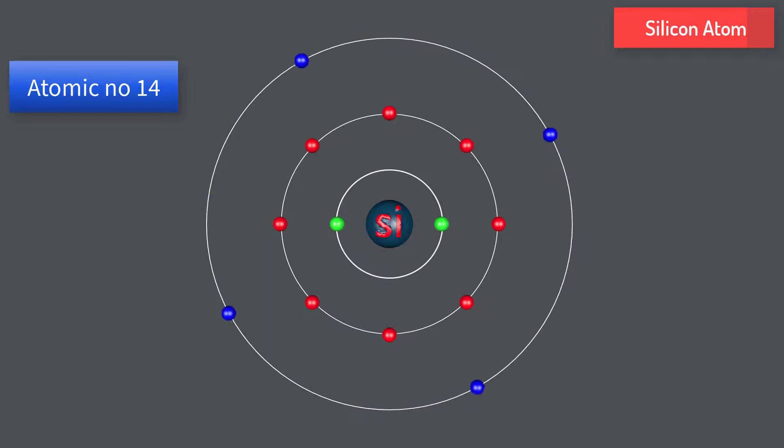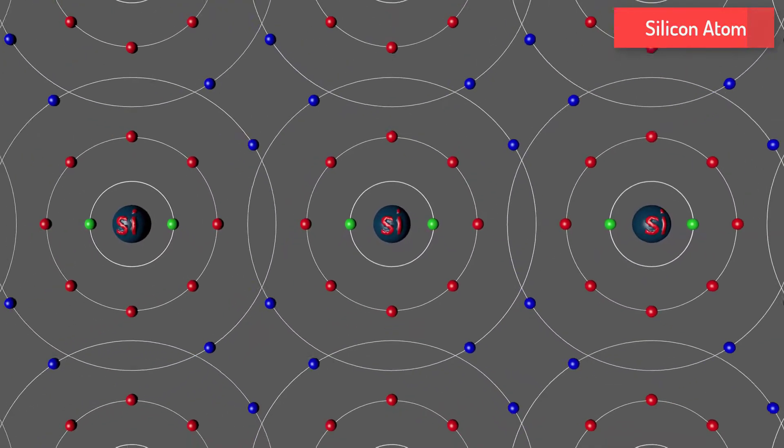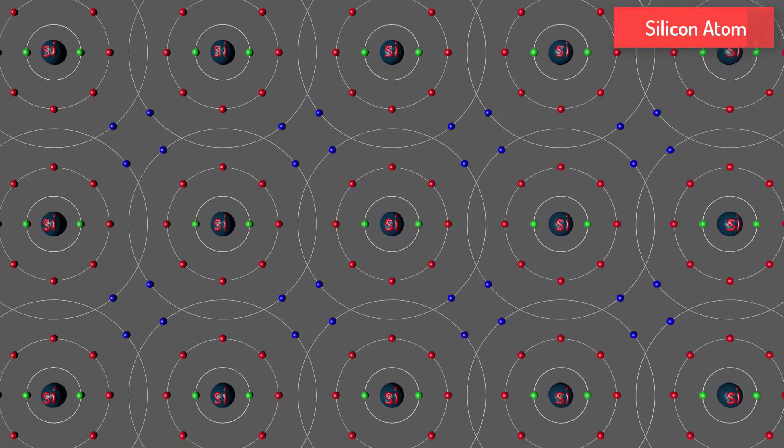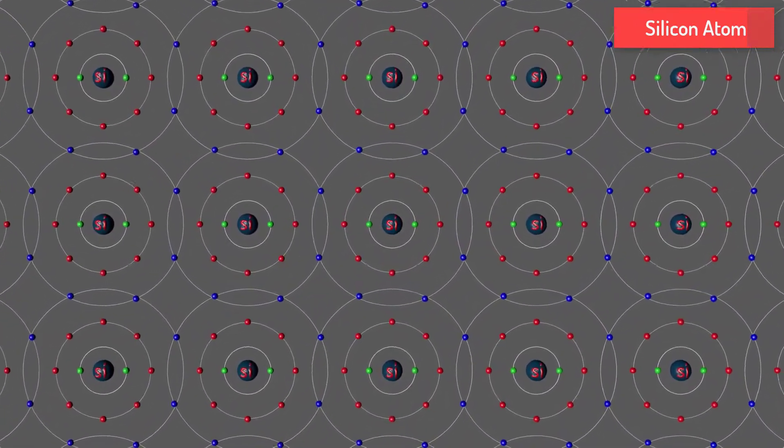Silicon atom has atomic number 14, which has 14 electrons in their shells. Four electrons are in the valence shell. They freely move around the valence shell.